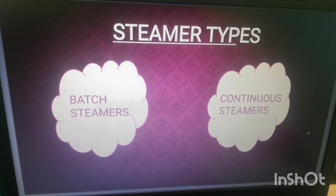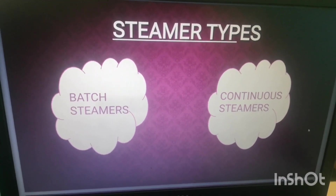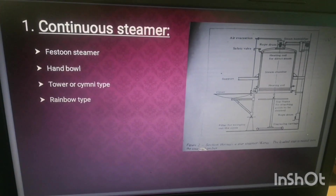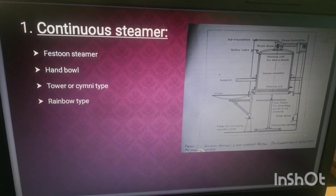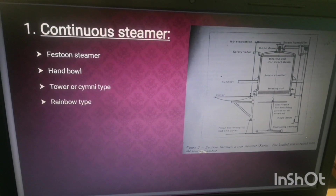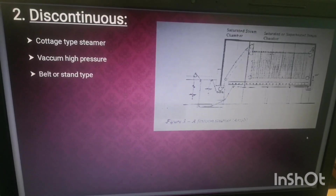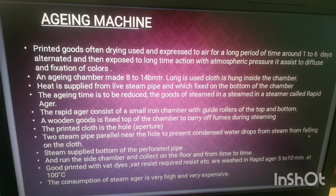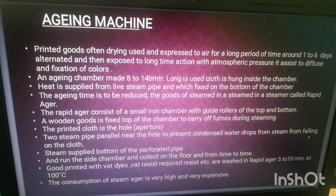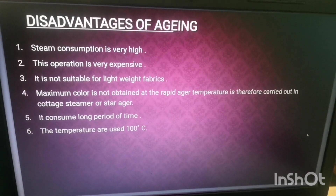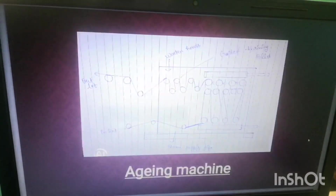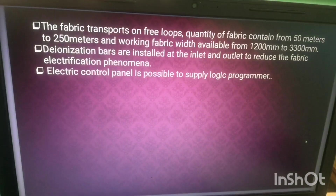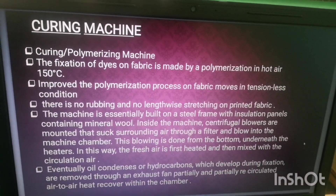Types of steamers: batch steamer and continuous steamer. This is a continuous steamer, and this is a discontinuous steamer. Next is the aging machine, followed by the curing machine.